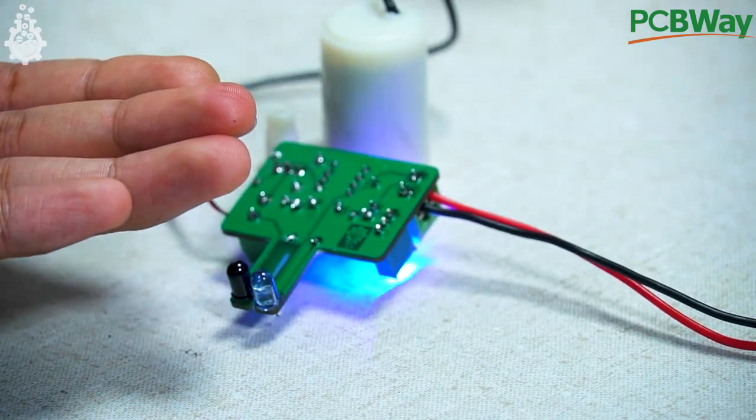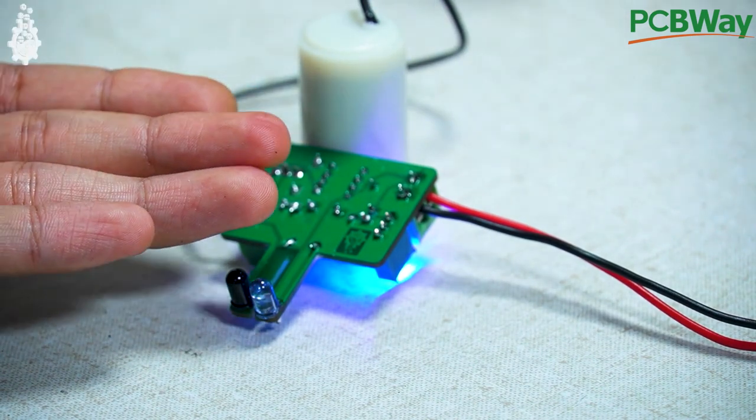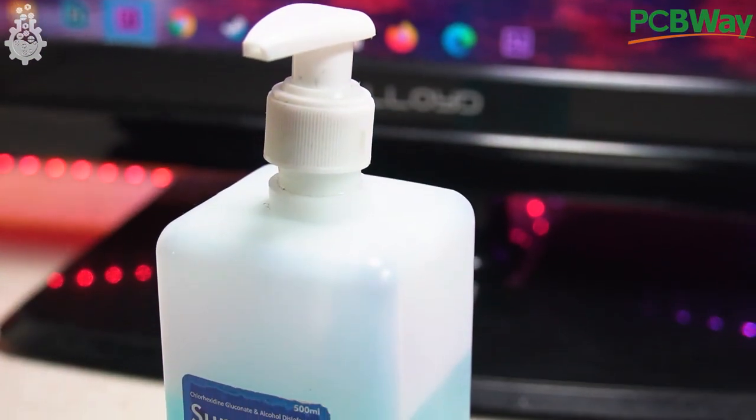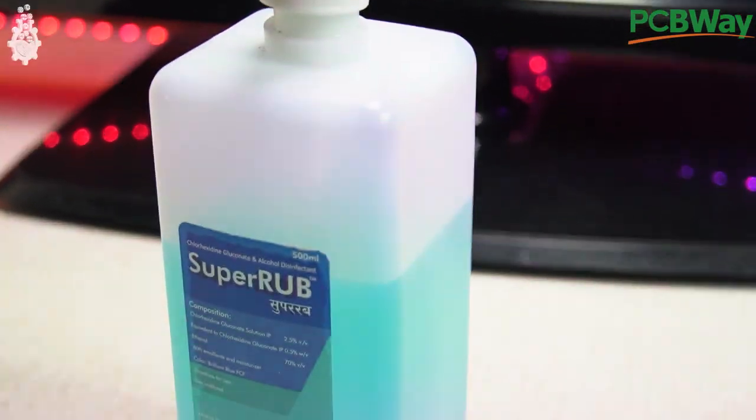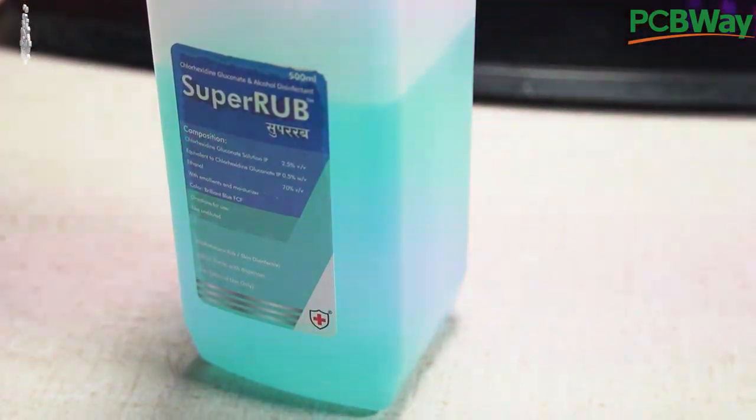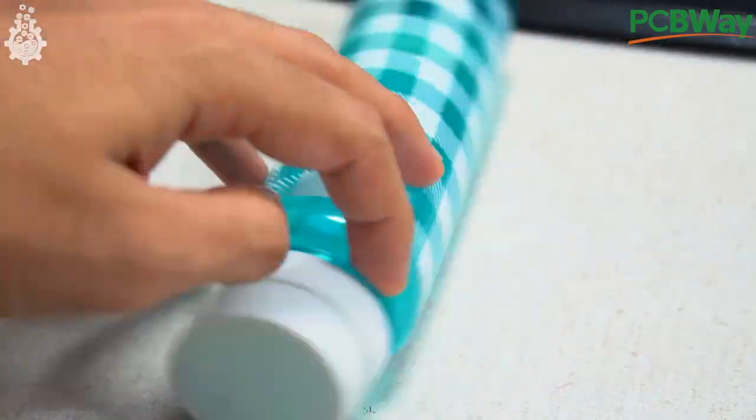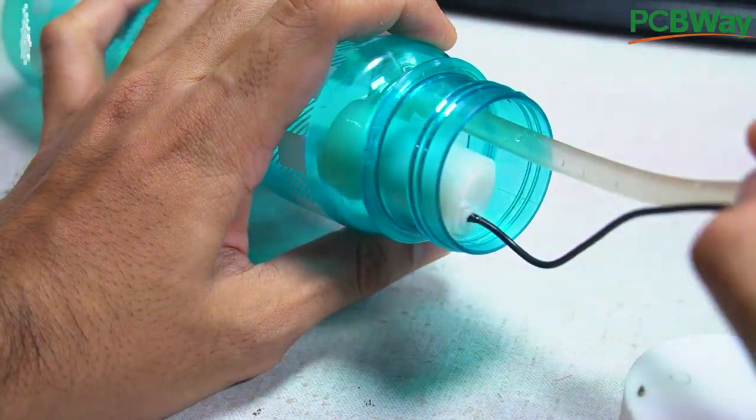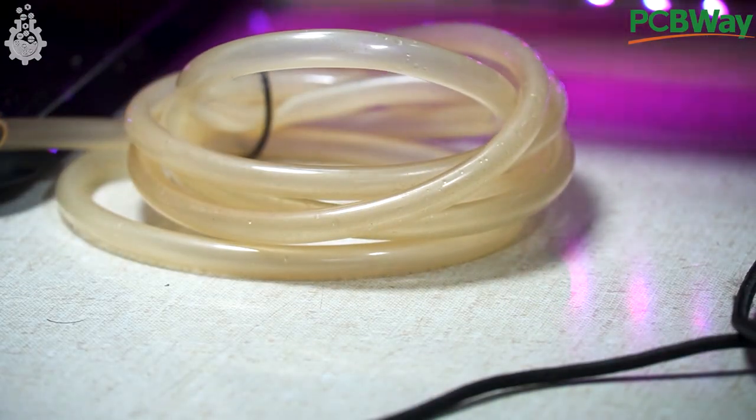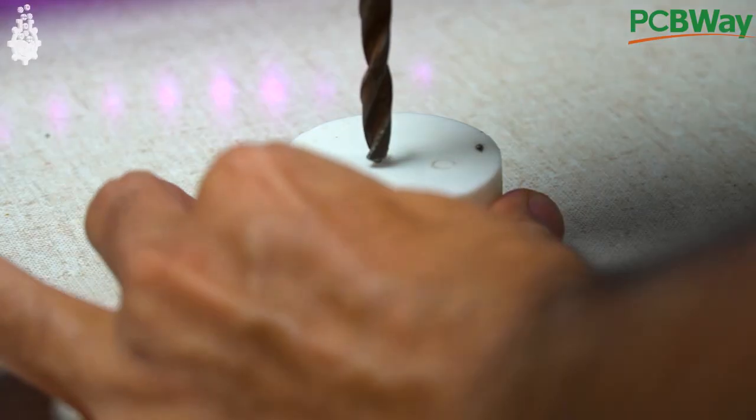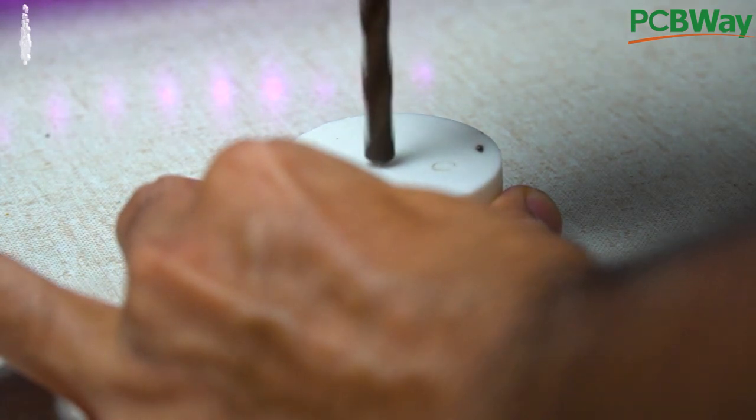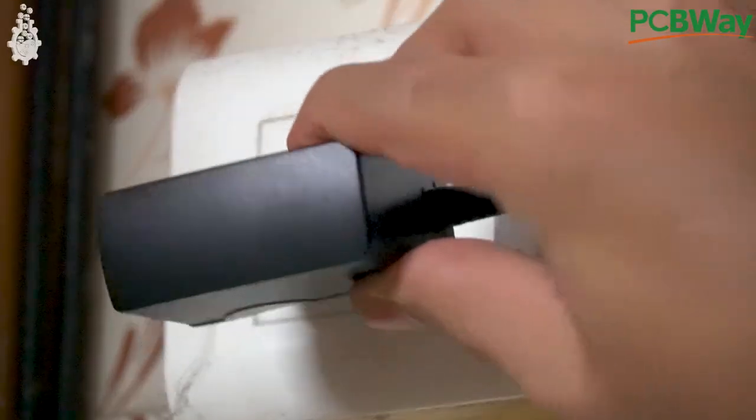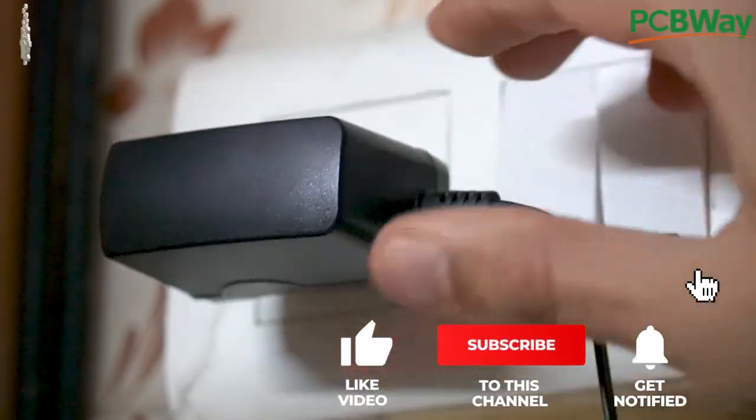Once our electronic part is done, we will start to bring this project to life. We need a storage container to store alcohol hand sanitizer or hand rub, for which I found this bottle with a cap wide enough to fit the pump inside. I used aquarium tube to get the output of the pump from the dispenser.